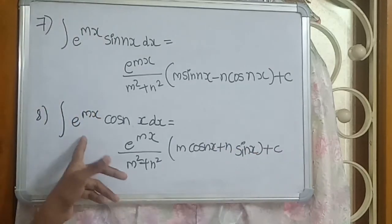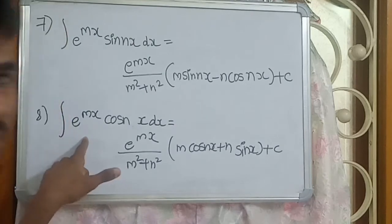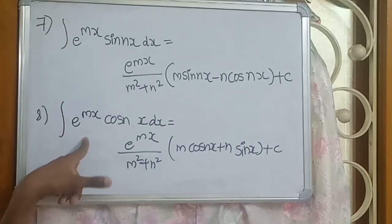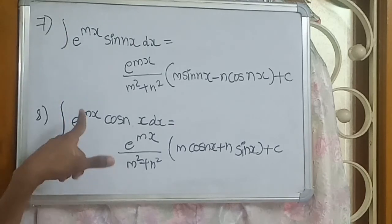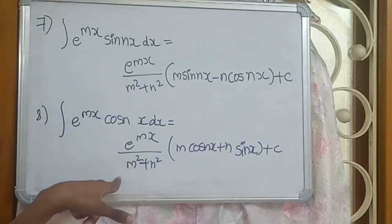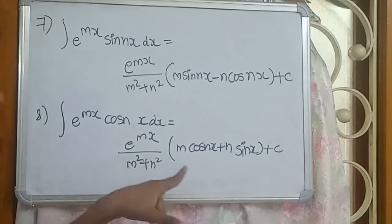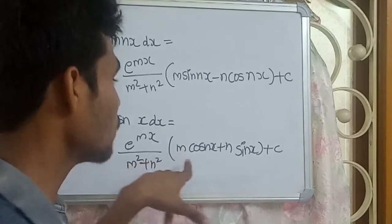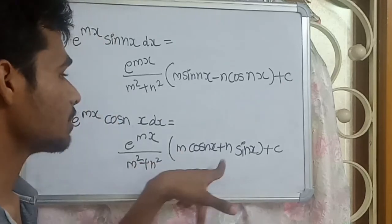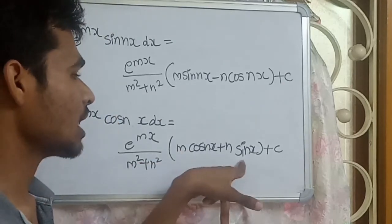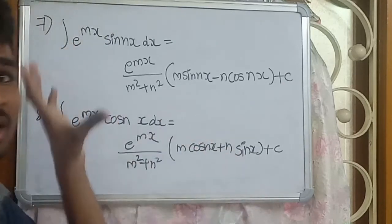Eighth formula: integration of e to the power mx times cos nx dx equals e to the power mx by m squared plus n squared times (m cos nx plus n sin nx), plus C.